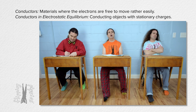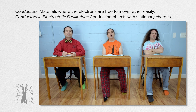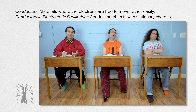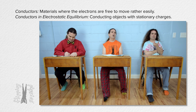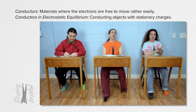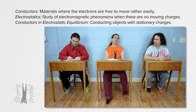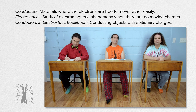I thought equilibrium meant the net force acting on the object or system was zero. That means the acceleration is zero, which means it could be at rest or moving at a constant velocity. So that means the charges do not have to be stationary — they could be moving at a constant velocity. But electrostatics is the study of electromagnetic phenomena that occur when there are no moving charges. By definition, the charges in conductors in electrostatic equilibrium need to be stationary.